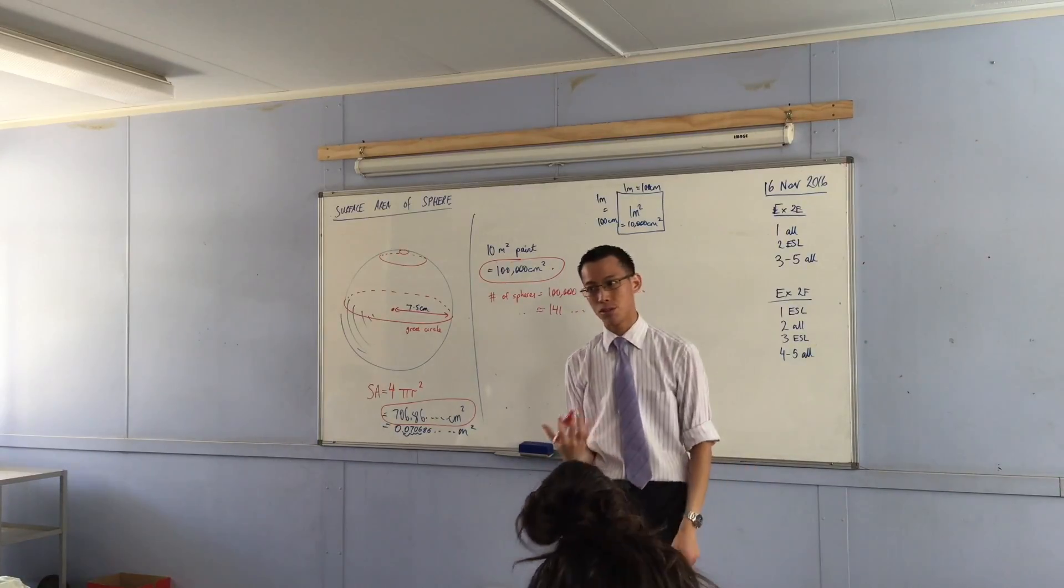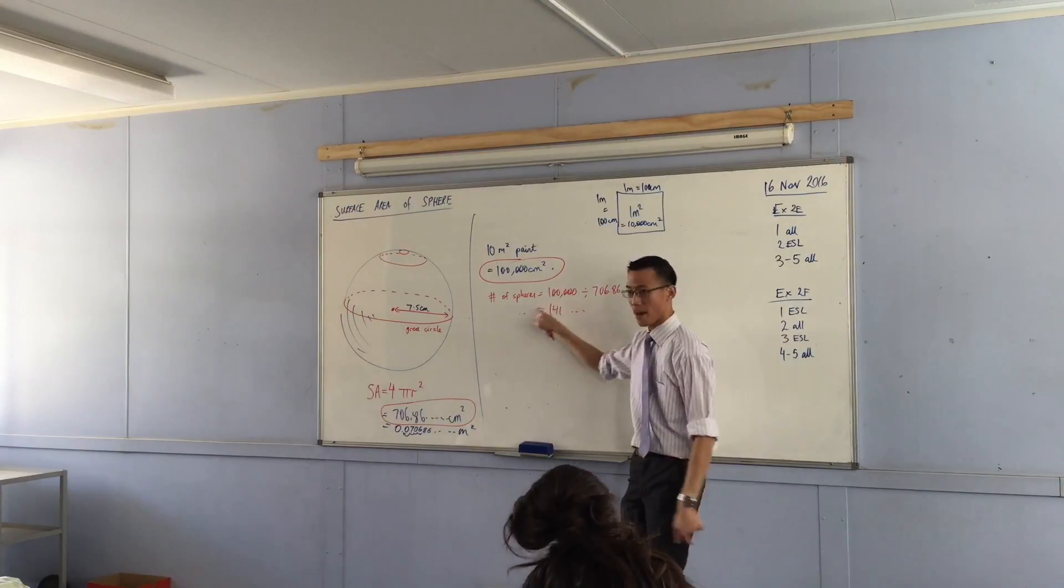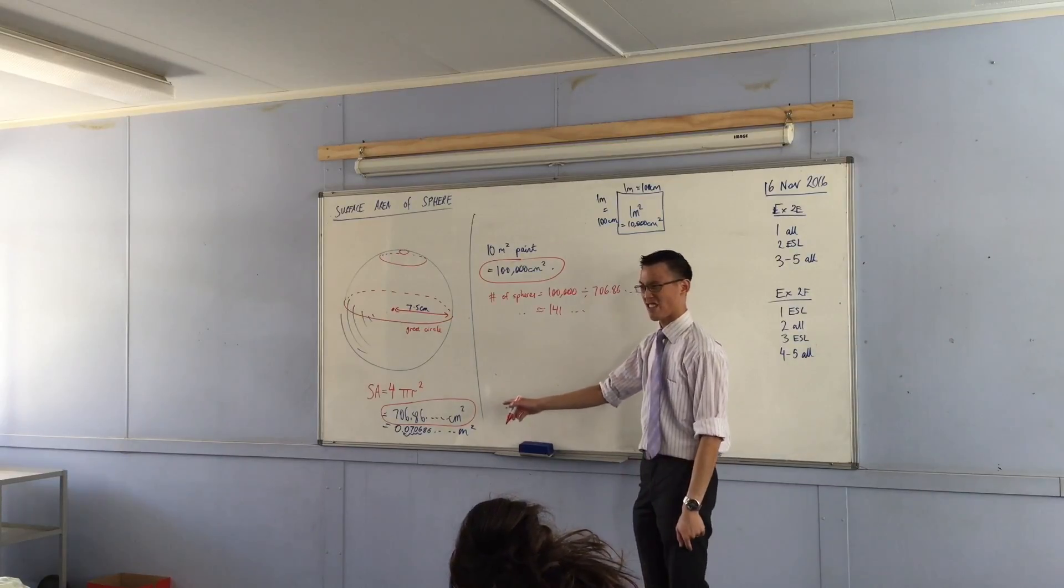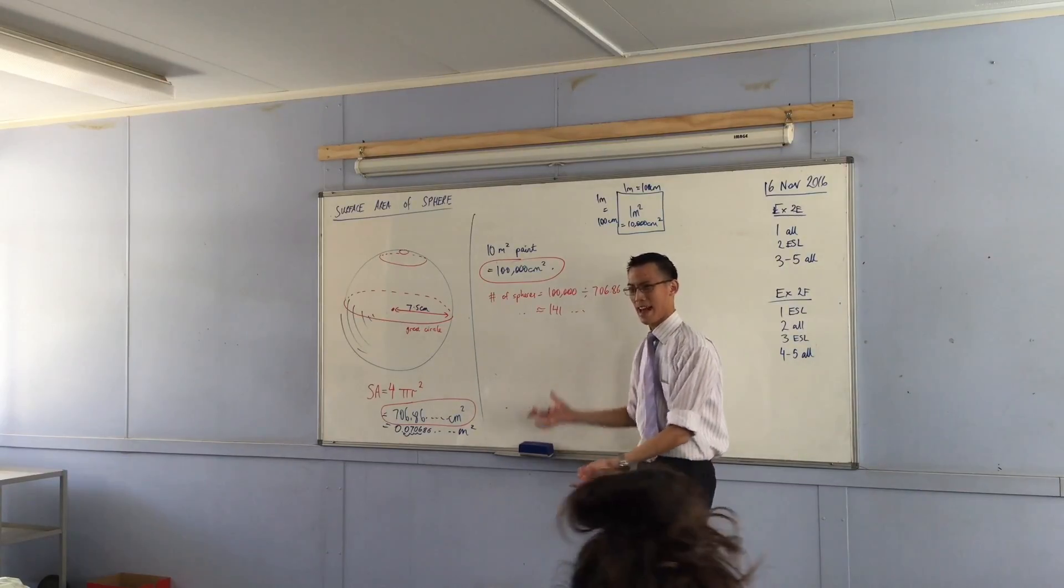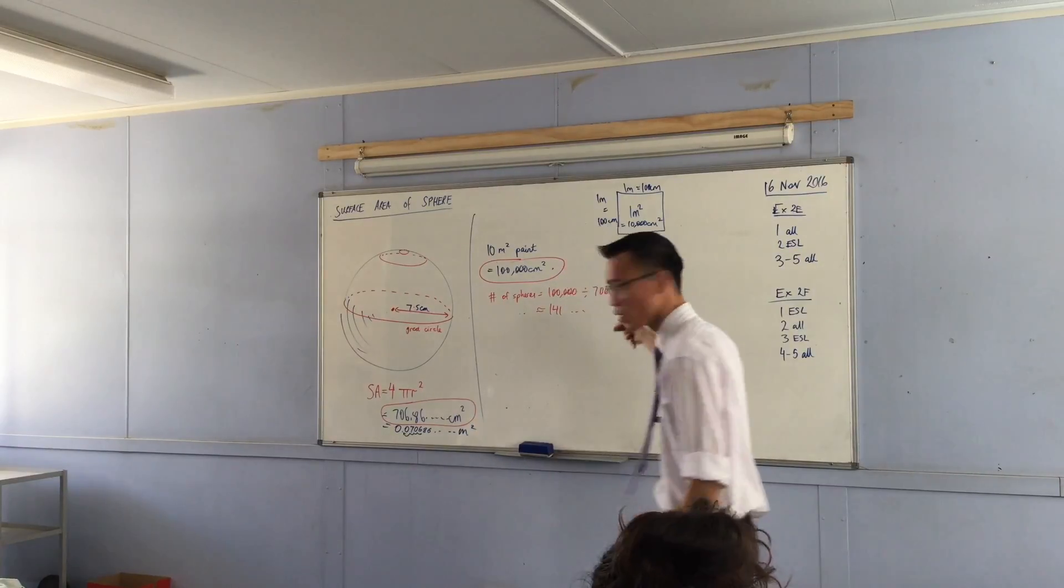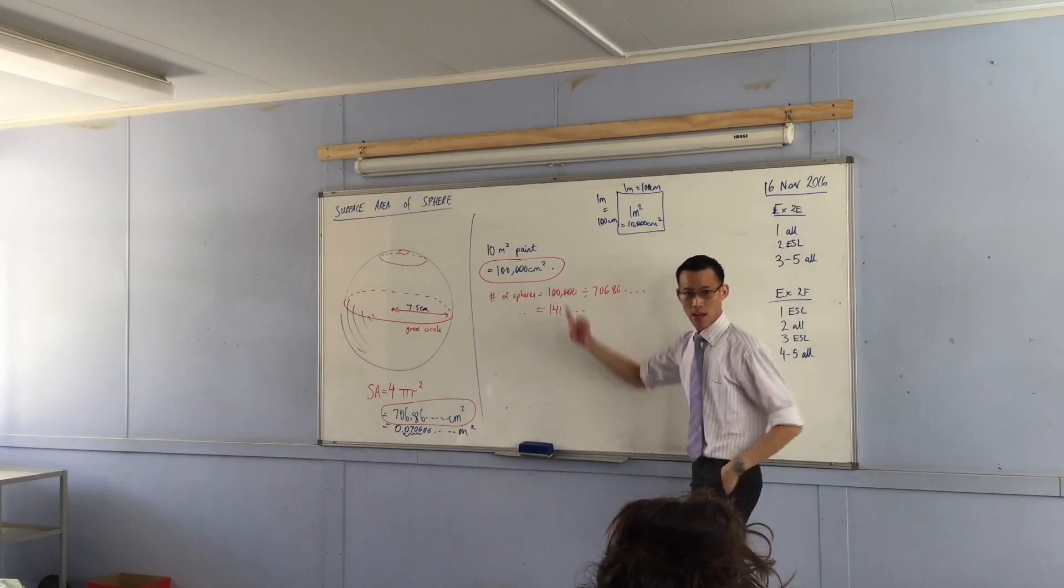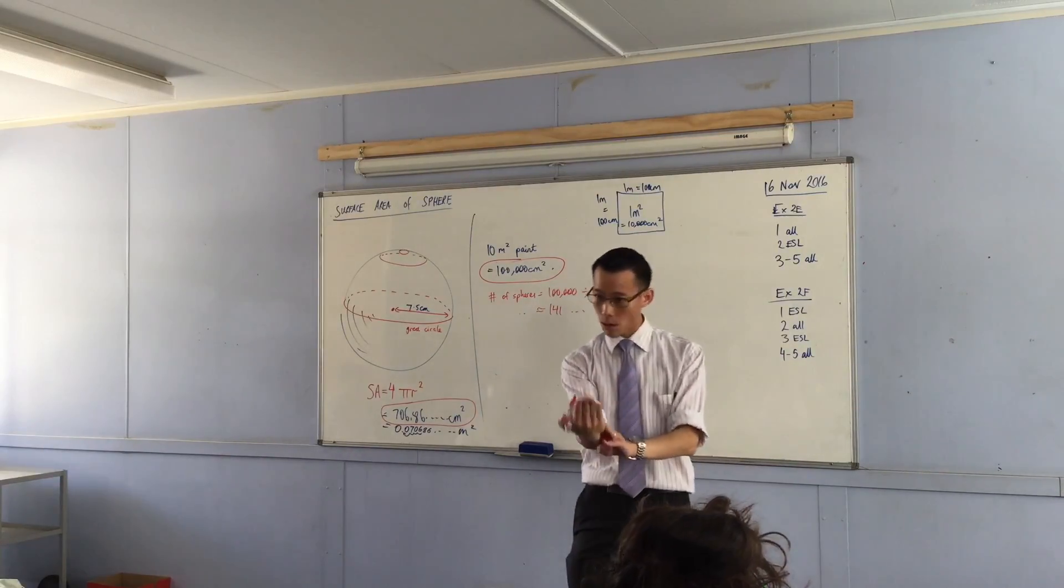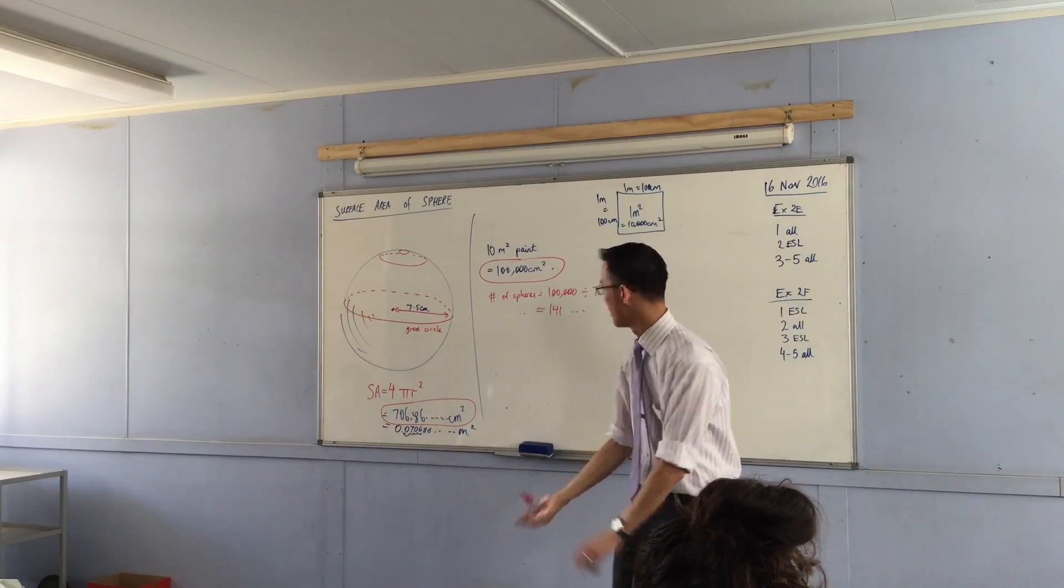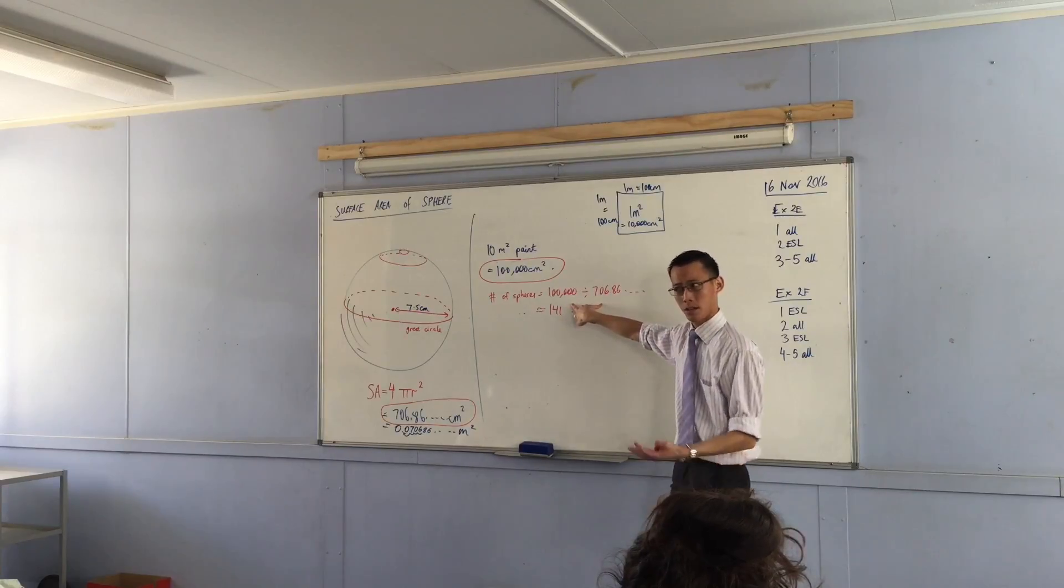If you were to do this the other way, if you did 706 divided by a hundred thousand, you're going to get like 0.007 or something like that. How many spheres is that? Not even a whole sphere. That doesn't make sense. If you did this the other way, look at your answer and think, what's gone wrong? That prompts you to think, I'm actually dividing it the wrong way around.